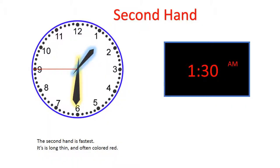The second hand is fastest. It's long, thin, and often colored red. It's not always on a clock, but it is the third hand if it's on there.